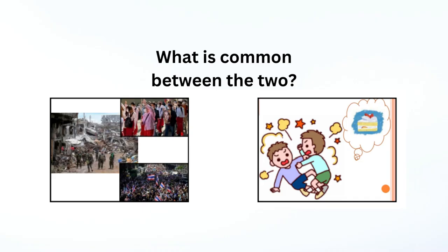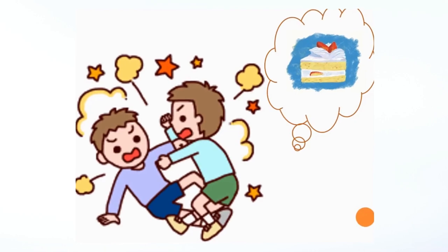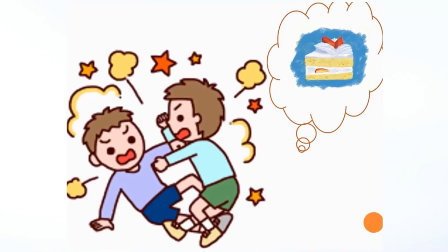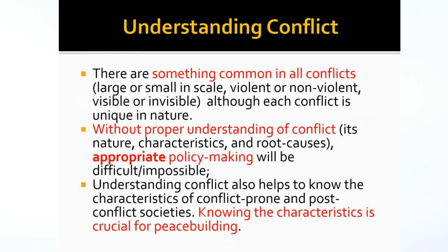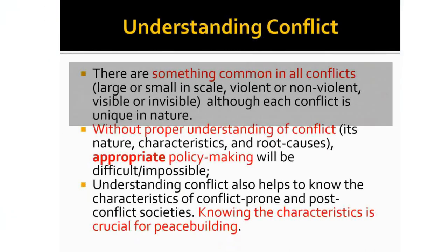The question is: is there anything common between conflict at the interpersonal level and conflict at the national level? For instance, conflict in Thailand, conflict in Myanmar, conflict in the Philippines, conflict between these two brothers — are there anything common? In conflict studies, we all agree there is something common in all conflict, whether it is big or small, whether it is at the national level or interpersonal level.